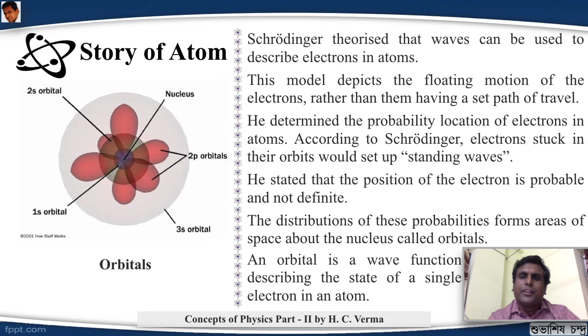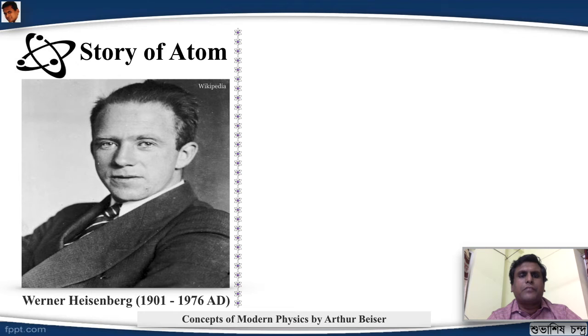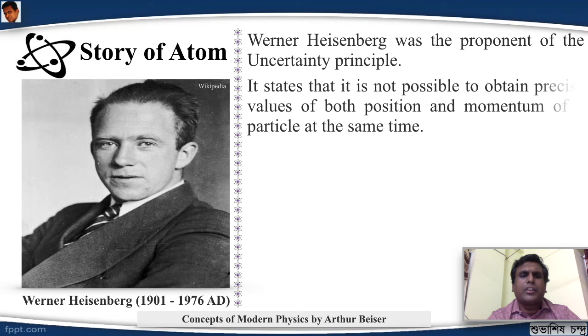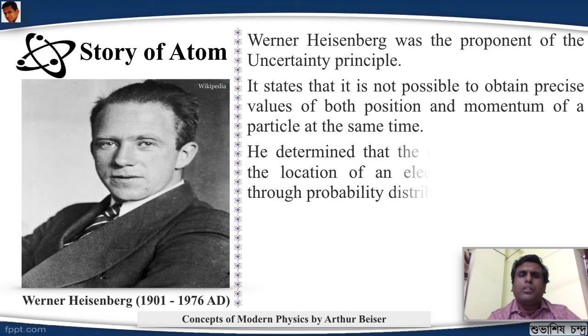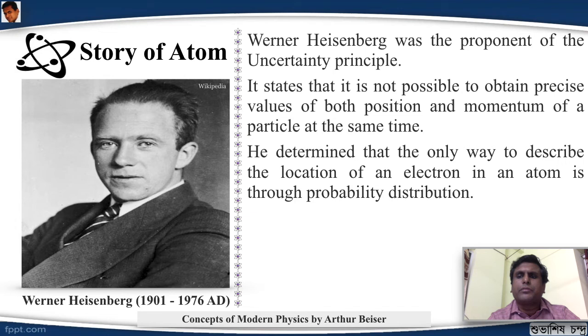Before we move to the atomic model that was derived out of Schrödinger's wave theory, we have to look into another great scientist, one of my favorites, Werner Heisenberg. Werner Heisenberg was a young scientist and one of the biggest geniuses the world has ever seen. He was the proponent of the Uncertainty Principle. The Uncertainty Principle states that it is not possible to obtain precise values of both position and momentum of a particle at the same time. He determined that the only way to describe the location of an electron is through probability distribution - that is, you can give a probability of where the atom will be, not the exact place. Just that Schrödinger did it with wave theory, Heisenberg did it with mathematical models. This principle forms the basis of the electron cloud model.